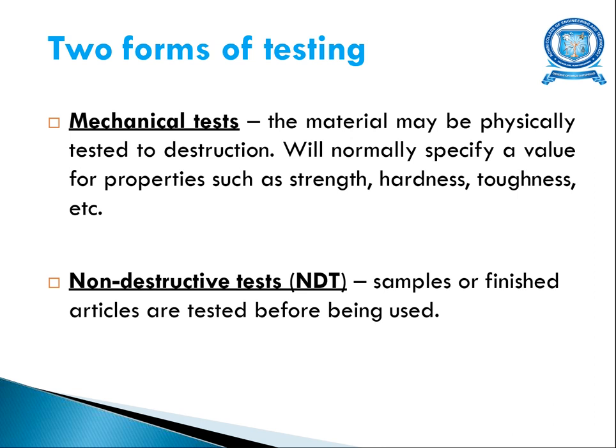Normally there are two forms of testing: mechanical test — destructive and non-destructive. In mechanical (destructive) tests, the materials may be physically damaged, and properties such as strength, hardness, and toughness are found. In non-destructive testing, samples of finished products are tested before being used, and after testing the sample is not damaged, so you can reuse the parts.